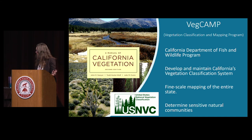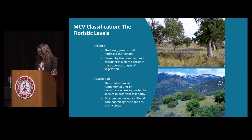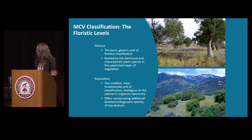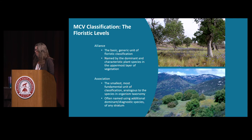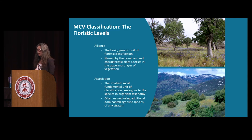We also work to create fine-scale vegetation maps, as well as determine rarity or sensitivity of these natural communities. I'm going to be talking about new vegetation concepts, and there's some jargon I want to make sure we're on the same page about. Natural communities are repeating patterns of plant species assemblages across the landscape. We talk about those units at the alliance and association level — this is the finest scale, and that's what we rate for sensitivity and how we define our vegetation concepts.